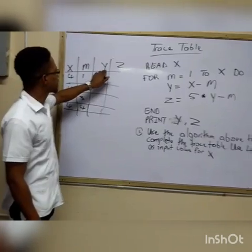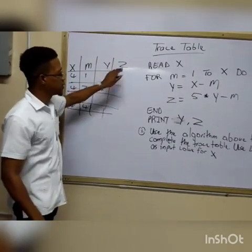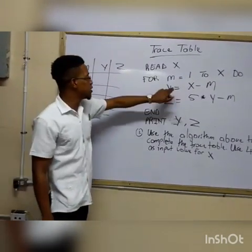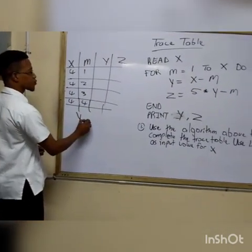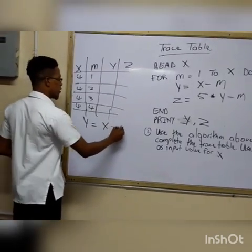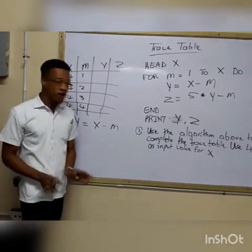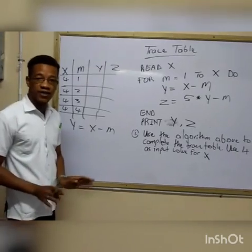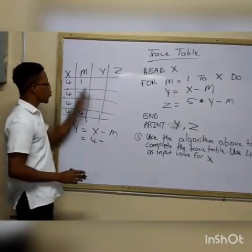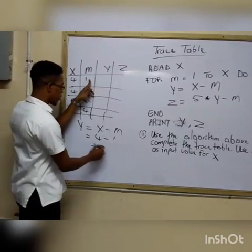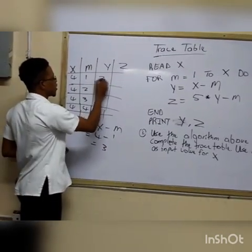We want to find the value for y and z. Now the formula for y says y equal to x minus m. So let's do it. So we are going to have y equal to x minus m. The current value for x is 4, right? So we are going to have 4 minus 1. 1 is the current value for m. That's going to be equal to 3. So we are going to have 3 here.